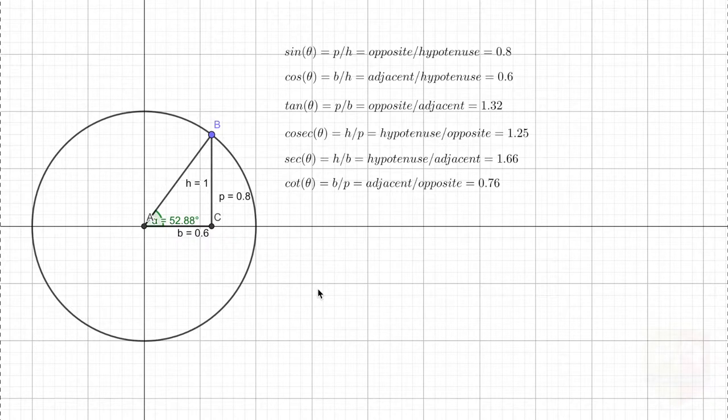Hello friends, in this session we are going to discuss the values of different trigonometric ratios for some specific angles. We are going to start with angle equal to zero degrees. If you see the angle, I'm talking about angle BAC.